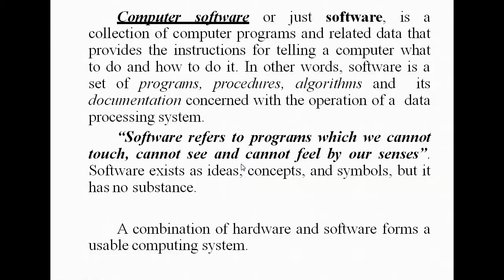Software is a collection of computer programs and related data that provides instructions telling a computer what to do and how to do it. In other words, software is a set of programs, procedures, algorithms, and documentation concerned with the operations of a data processing system. It refers to programs which we cannot touch, see, or feel — software exists as ideas, concepts, and symbols but has no physical substance. A combination of hardware and software forms a usable computing system.